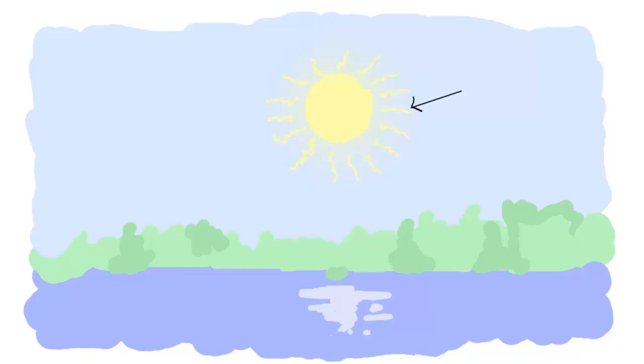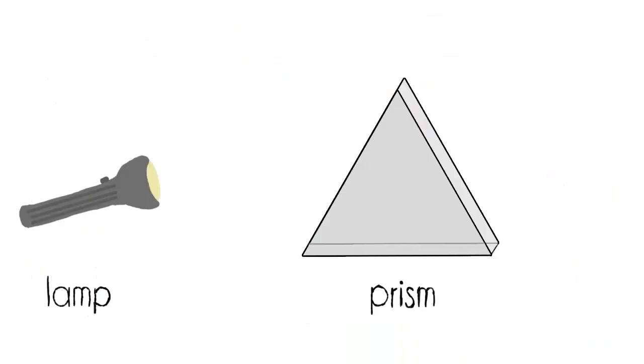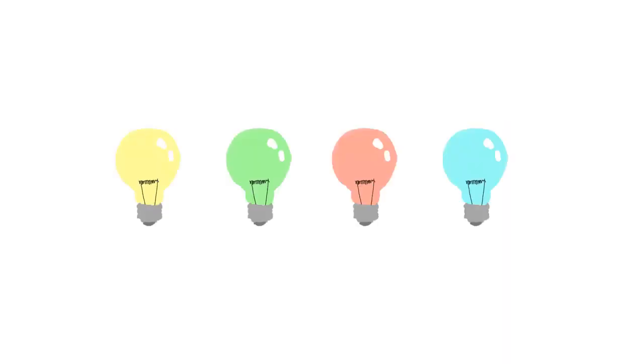If you find this hard to believe, just try shining a white light from any kind of lamp through a glass triangle, called a prism, and you will see how the white light beam splits up into all the different colors that it's made up of. Well, that's how different colored lights work.